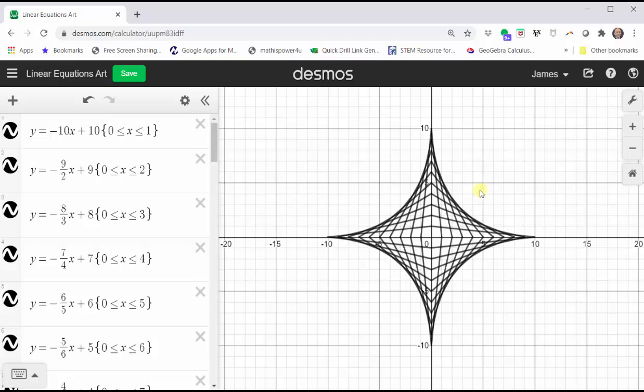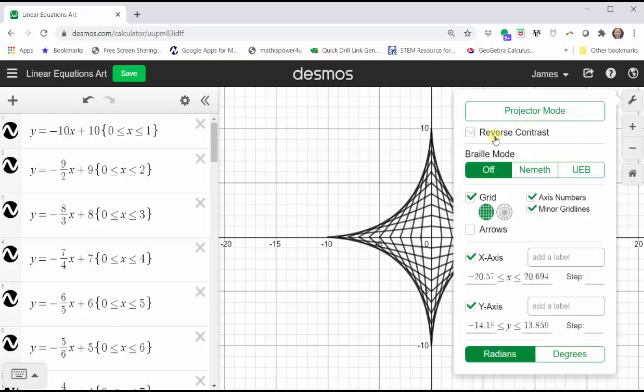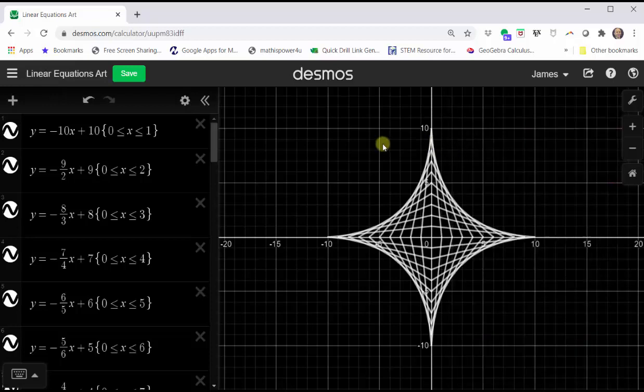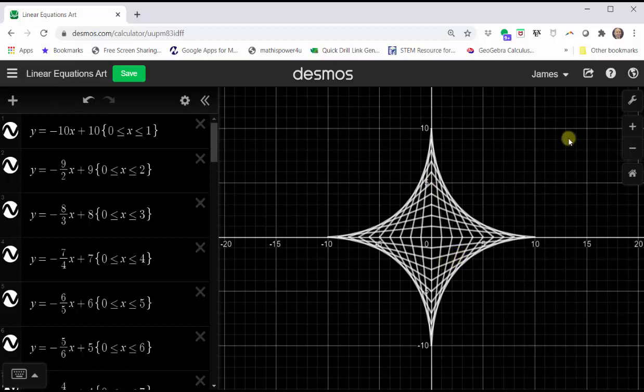Before we go over the equations and the restrictions, one thing we can also do is click on the wrench in the upper right-hand corner, click reverse mode, then close the menu by clicking outside. Now notice how the coordinate plane is in black and the line segments are in white. Let's go back to regular mode.